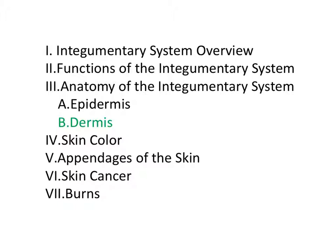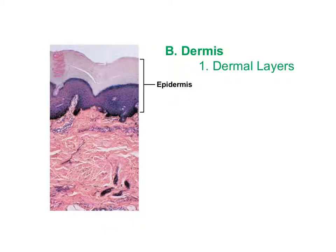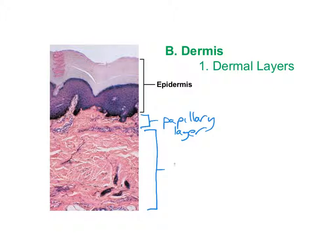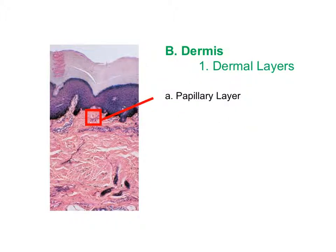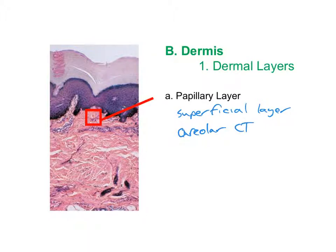Now we'll talk about the dermis, the deeper layer. The dermis is composed of two layers: the outer papillary layer, closer to the surface, and the deeper, thicker reticular layer. The papillary layer is a superficial layer composed of areolar connective tissue, which is a loose connective tissue allowing blood vessels to pass through. This is where many of the capillary beds in the skin are found. The name comes from the papillae — little projections that indent up into the epidermis, like an egg-carton foam pattern.